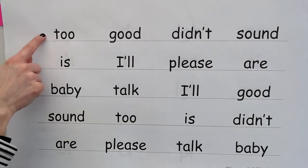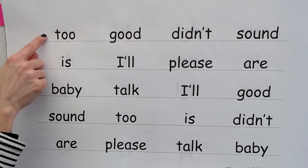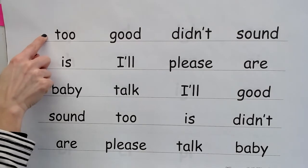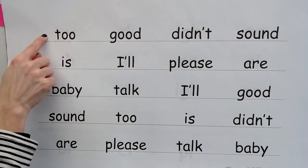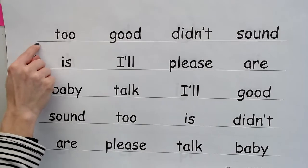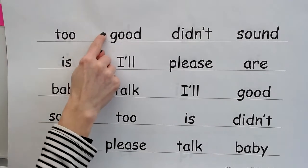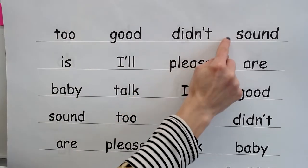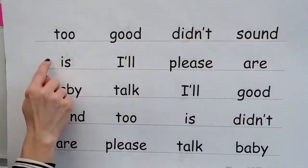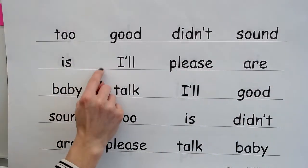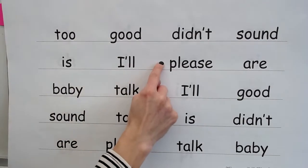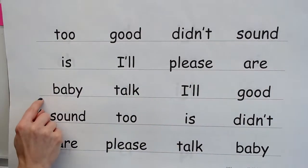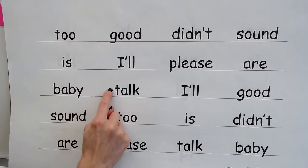You're going to practice reading some words. When my finger's to the left, think of the word. When I slide under, tell me the word. Get ready: word — to; word — good; contraction — didn't; word — sound; word — is; contraction — I'll; word — please; word — are; word — baby; word — talk.